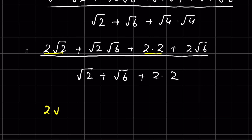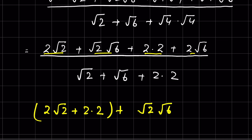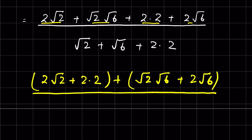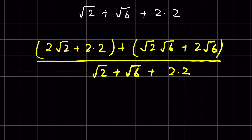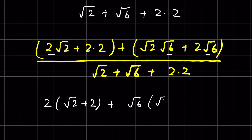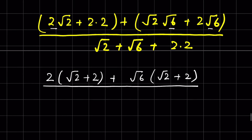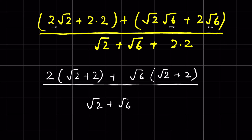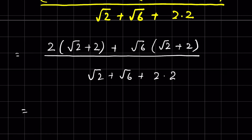If we take these two terms and write them together, it will be 2 times square root of 2 plus 2 times 2. Again these two terms together: square root of 2 times square root of 6 plus 2 times square root of 6, upon square root of 2 plus square root of 6 plus 2 times 2. Now let's take 2 common here, so 2 times square root of 2 plus 2. And here square root of 6 we can take common, so square root of 6 times square root of 2 plus 2, upon square root of 2 plus square root of 6 plus 2 times 2.